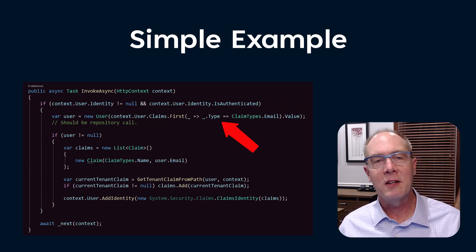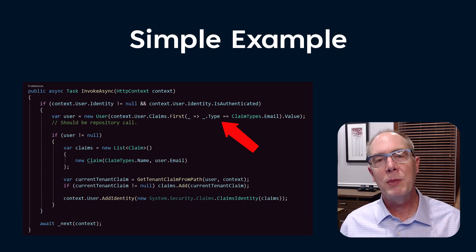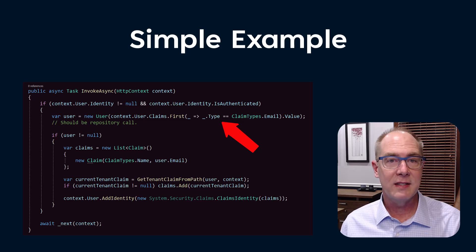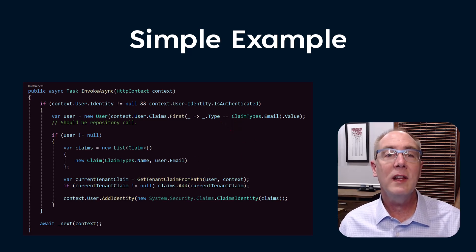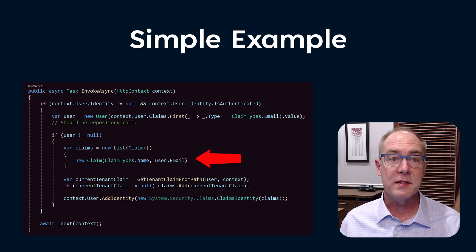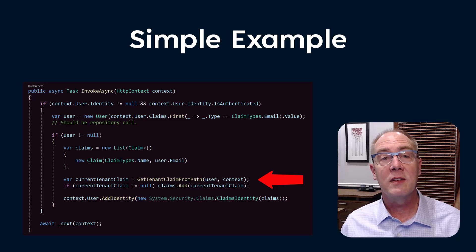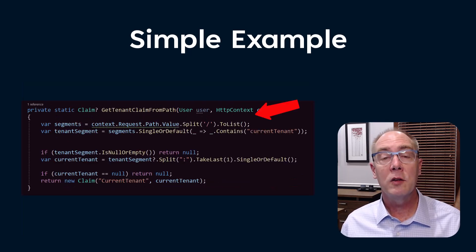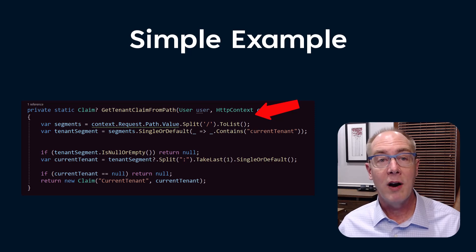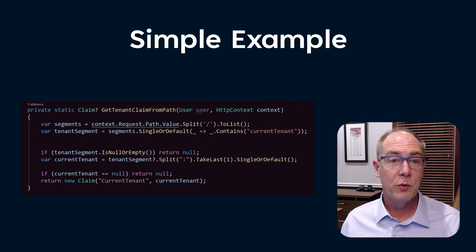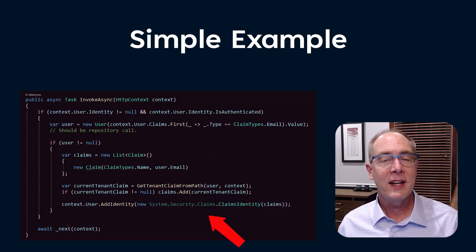If the user is authenticated, we can get the user's email address. I'm just creating a user object here, but normally I would spin up a repository and get the user from the application's database. Then I can create a new claim with that email. I can also add a claim based on the path of the URL from the request. For example, I could specify which tenant the user is acting on by including it in the path of the URL.